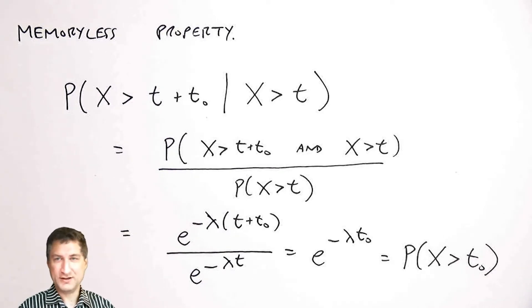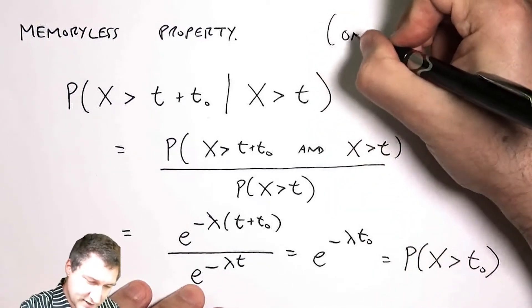If I've already waited t units, or if an arrival hasn't occurred in t, then having to wait t_0 more units is the same as having had to wait t_0 units in the first place. This is again only true for exponential, and it's just a good thing to know in general.